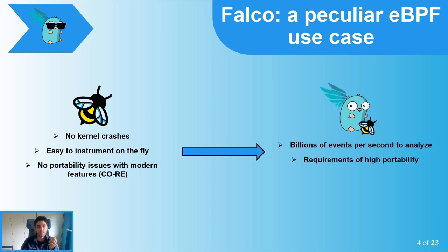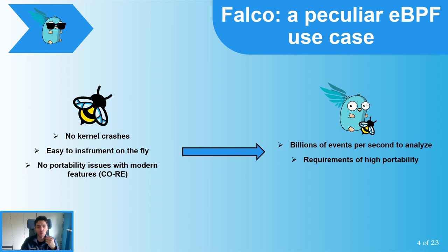But why is Falco a peculiar use case? Basically, it wants to exploit all advantages even in unconventional scenarios. On one side, it needs to capture most system events without degrading performance — capturing syscalls, context switches, page faults, and so on, generating up to billions of events per second. On the other hand, Falco requires high portability; the support matrix is huge, going from kernel 4.14 and Clang 5.0 onwards. The BPF probe must be successfully compiled for all elements of this matrix, accounting for Clang optimizations and BPF verifier requirements.